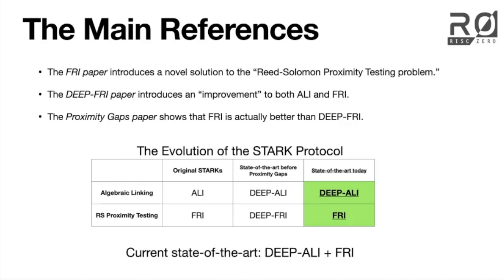Question: when you say FRI is actually better than deep-FRI, does that relate to execution time or execution time relative to security? Great question. DEEP is computationally more intense than not-deep, so there's extra computational burden to do DEEP. The thought was that by doing that extra computation you get better security. The realization in the proximity gaps paper was that the original FRI protocol actually had better security than originally proven, and the improved FRI security achieves the deep-FRI security without needing the extra computation of the DEEP part.